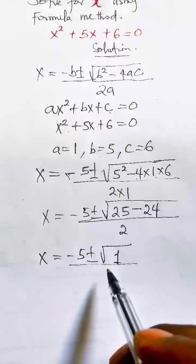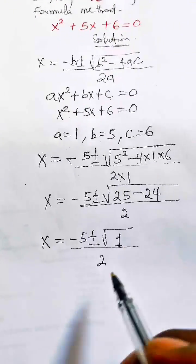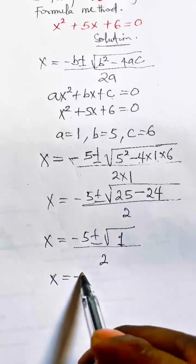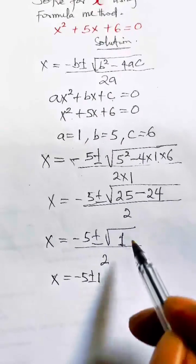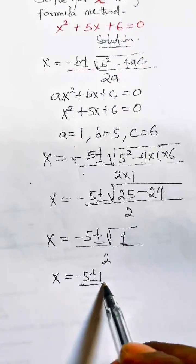The square root of 1 is 1. So x will be equal to minus 5 plus or minus 1, because the square root of 1 is 1, divided by 2.